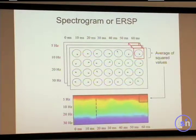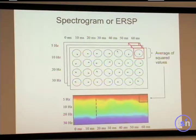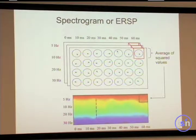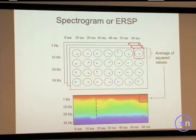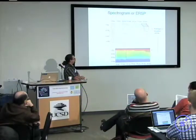So we get what we call the ERS — the Event Related Spectrum. For instance, if the event is at 20 milliseconds, this is how it's going to look: this is the power at 60 milliseconds after the stimulus at 5 Hz. You can see it's hard to interpret because low frequencies have much higher power than high frequencies, so what we usually do is remove the baseline value.